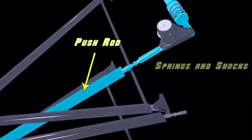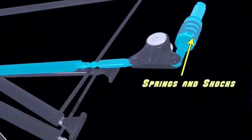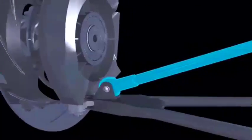The pushrod allows the springs and shocks to be placed inside the body of the car, thereby getting them out of the air stream. The pushrod attaches near the upright on the lower A-arm and extends upwards to the shock rocker.